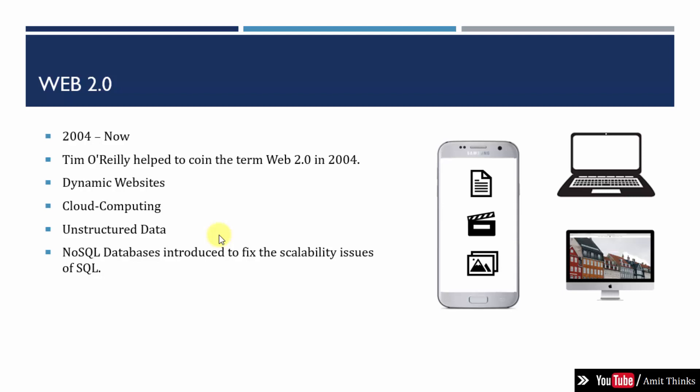At that time, dynamic websites started emerging. We saw Facebook being introduced, where you could sign up, log in, post images and text, which would get saved by the Facebook platform. In the same way, other platforms also came up, so there was a movement from static web pages to dynamic web pages.